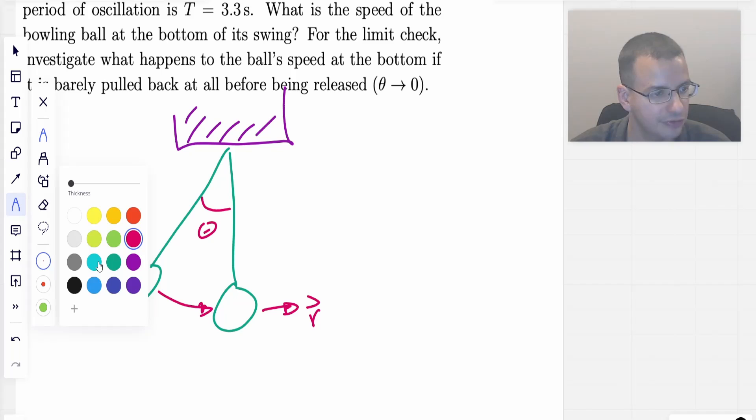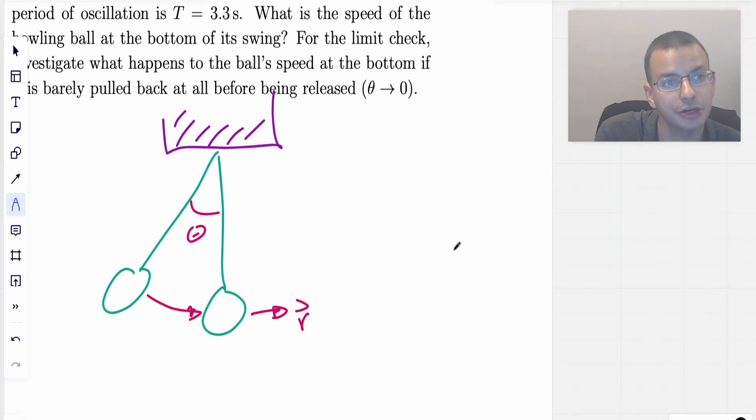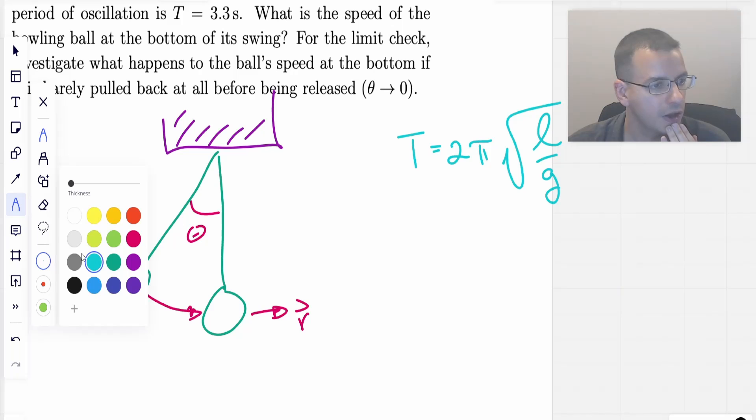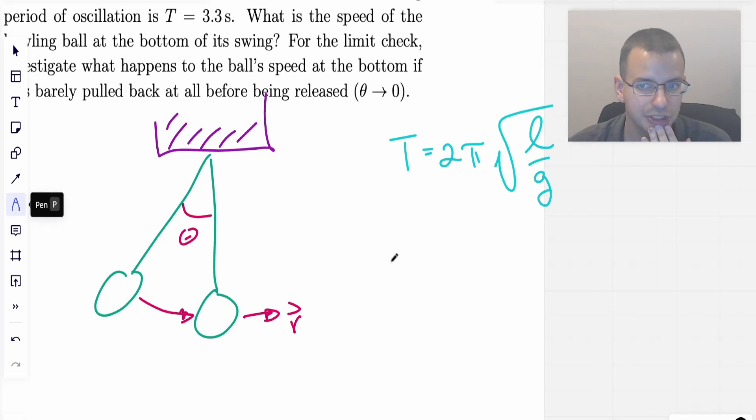The next step is to basically write out every formula you think might possibly be relevant here. The one I'm going to put up is for the period of a simple pendulum. Most people don't have this memorized. No reasonable person probably does. I've been doing this for a while, so I know this. But you're assumed to know it even though that's probably an unreasonable assumption. Memorize this for the test.